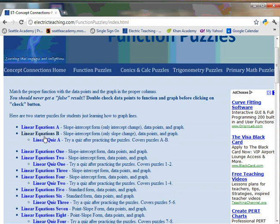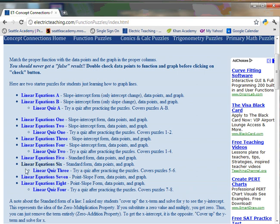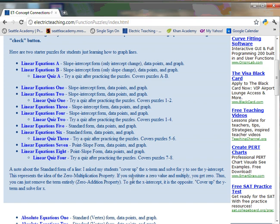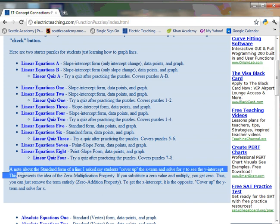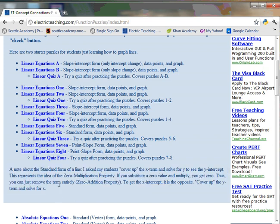If we go back to function puzzles, you'll see that I have linear equations B, which is only a slope change, and continuing linear equations with different forms, including standard form and point slope form. There's tricks to each of these, and on each of these we have quizzes.